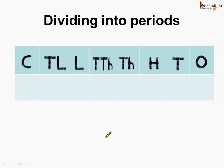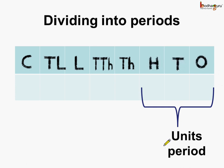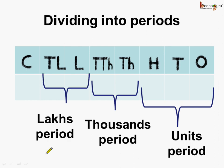To make it easy to read and write large numbers, all the place values are divided into periods. The 1s, 10s, and 100s form the units period. The 1,000 and 10,000 form the thousands period. Then comes the lakhs period — lakhs and 10 lakhs are under the lakhs period. So we have 3 periods: units period, thousands period, and lakhs period.